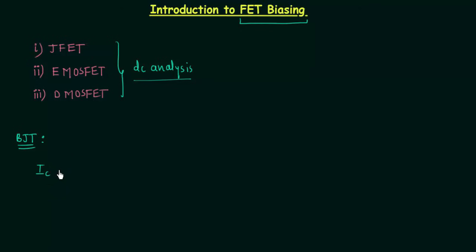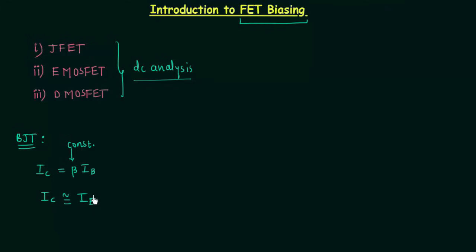In case of BJT, while performing the DC analysis, the collector current IC was equal to beta times IB, where IC is the output current and IB is the input current. Beta is constant — it is the amplification factor — and the collector current was nearly equal to the emitter current IE. The input voltage VBE, in case of a silicon transistor, was equal to 0.7 volt.